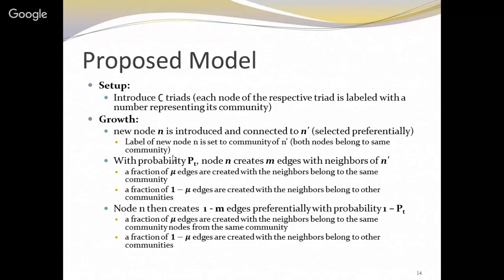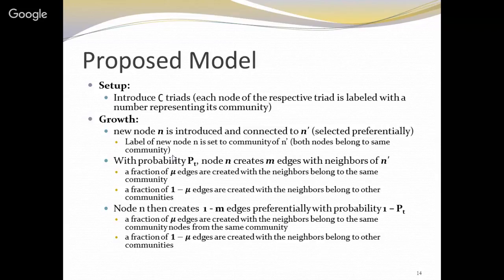At each time step, we introduce a new node N. N will be connected to another node N-dash, which is selected preferentially — using preferential attachment, as in the Barabási model. N is then assigned the community of N-dash. We then create triad formation steps: based on probability Pt, N will create M edges with the neighbors of N-dash. An important thing is that we control to which neighbors these edges will be created — whether they are part of the same community or not — and the mixing parameter decides this.